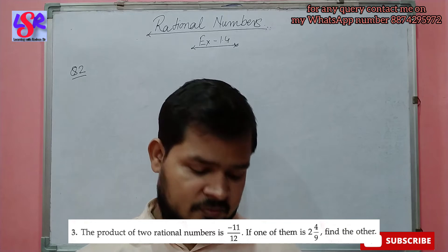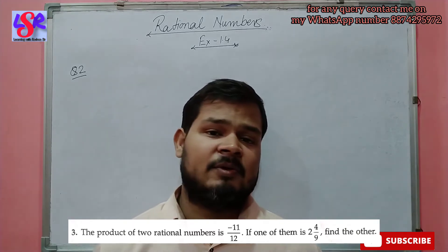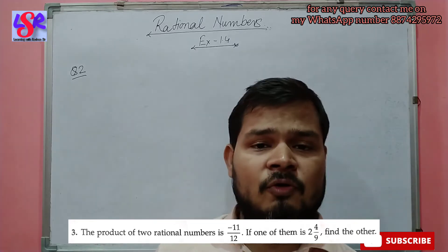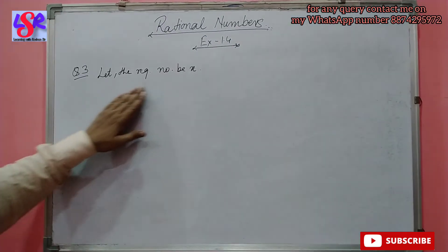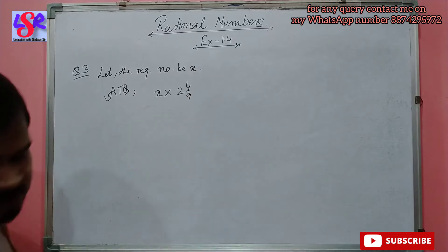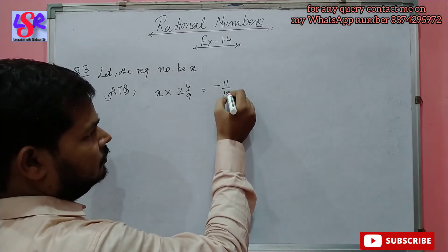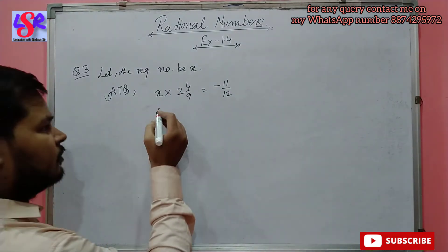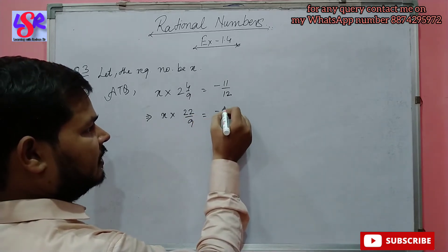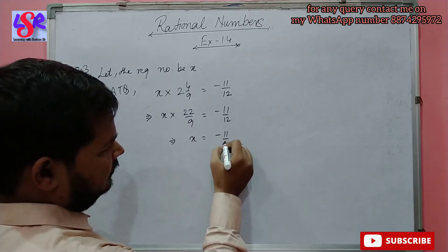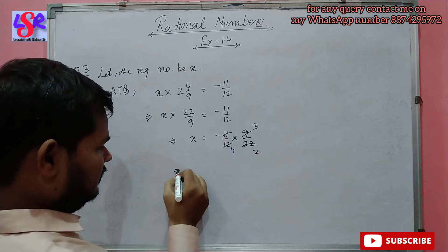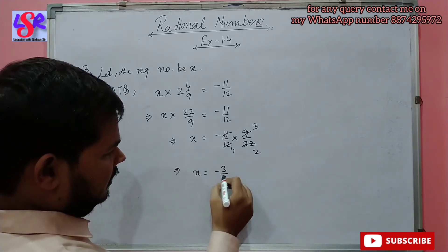Now after this we move to question number 3. The product of 2 rational numbers is minus 11 upon 12. If one of them is 2 whole 4 upon 9, find the other number. Let the required number be x. According to the question, x multiplied by 2 whole 4 upon 9 equals minus 11 upon 12. Converting 2 whole 4 upon 9 to improper form: 9 into 2 is 18, plus 4 is 22 upon 9. So x into 22 upon 9 equals minus 11 upon 12, which gives x equals minus 11 upon 12 into 9 upon 22. Reducing, we get x equals minus 3 upon 8 as the answer.